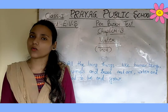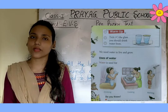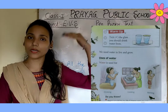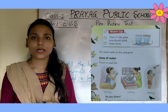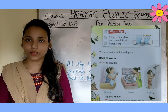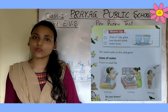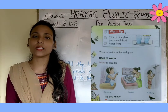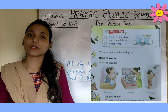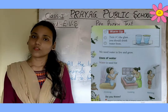Students, now open your book and see page number 34. We need water to live and grow. हमें जीवित रहने के लिए और बढ़ने के लिए water की आवश्यकता होती है। Without water, we cannot survive. बिना पानी के हम जीवित नहीं रह सकते। Next है uses of water, यानी कि जल का उपयोग — अब water का use हम कहाँ-कहाँ करते हैं।